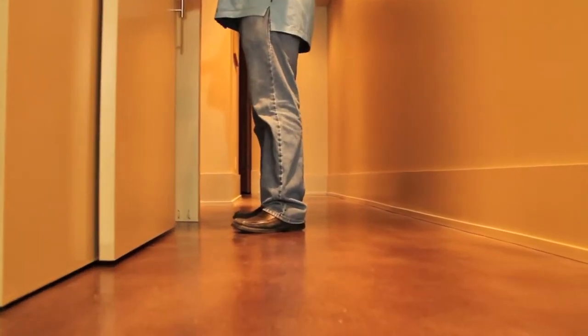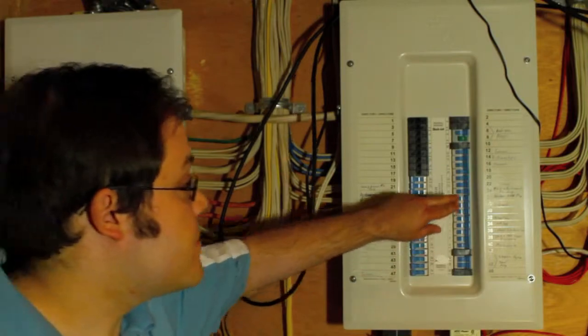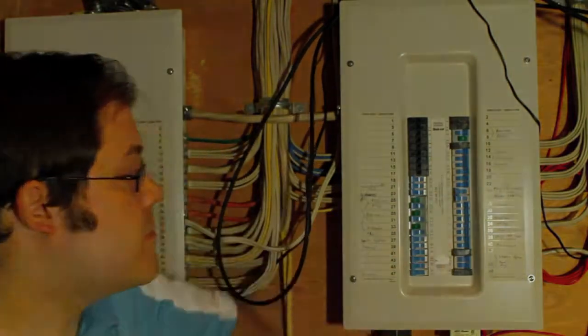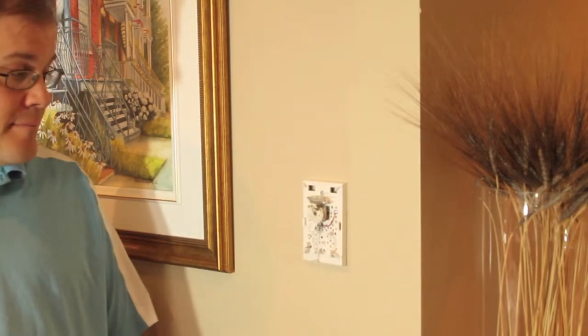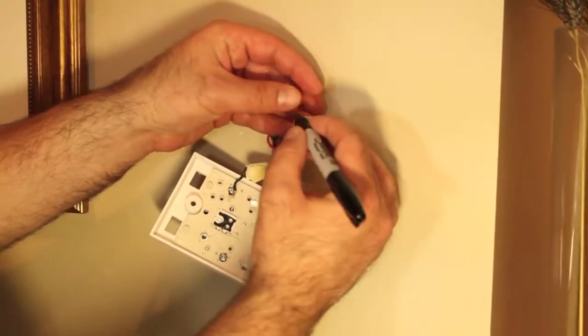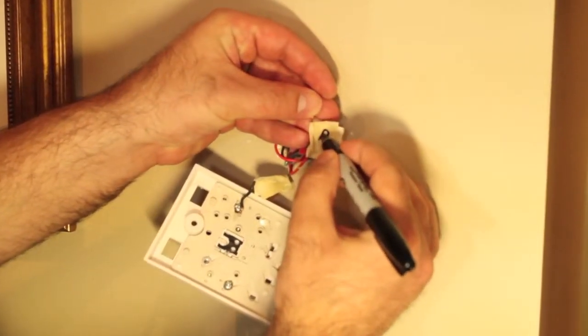Before removing the old thermostat shut the power off to the heating and the air conditioning systems at the breaker box. Fully remove the old thermostat. Use the masking tape to label each wire with the letter code for the terminal or screw it was connected to.